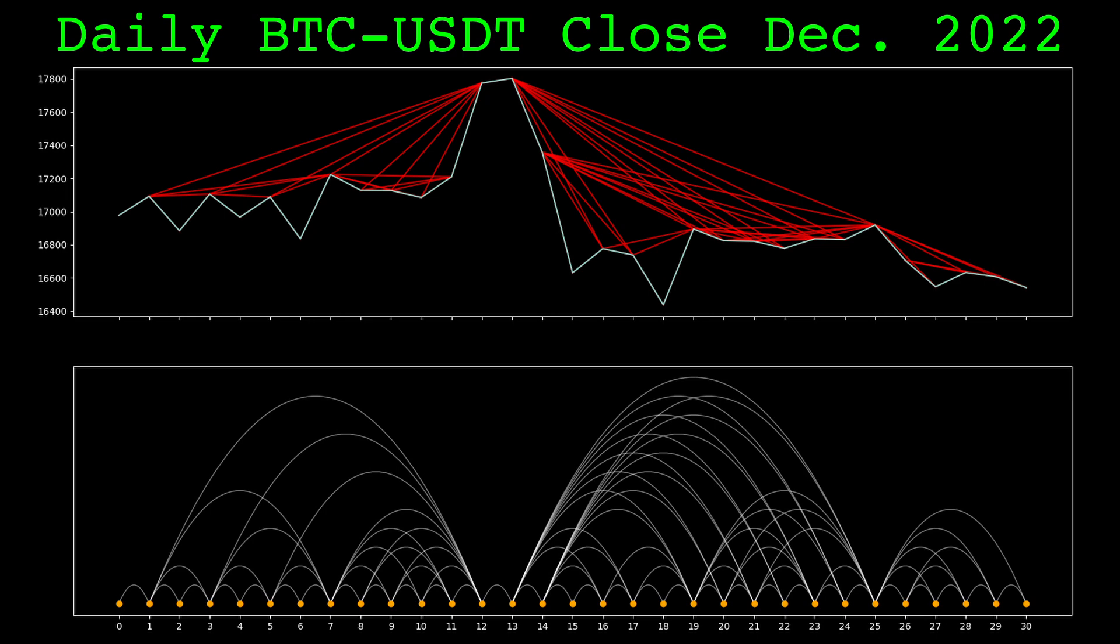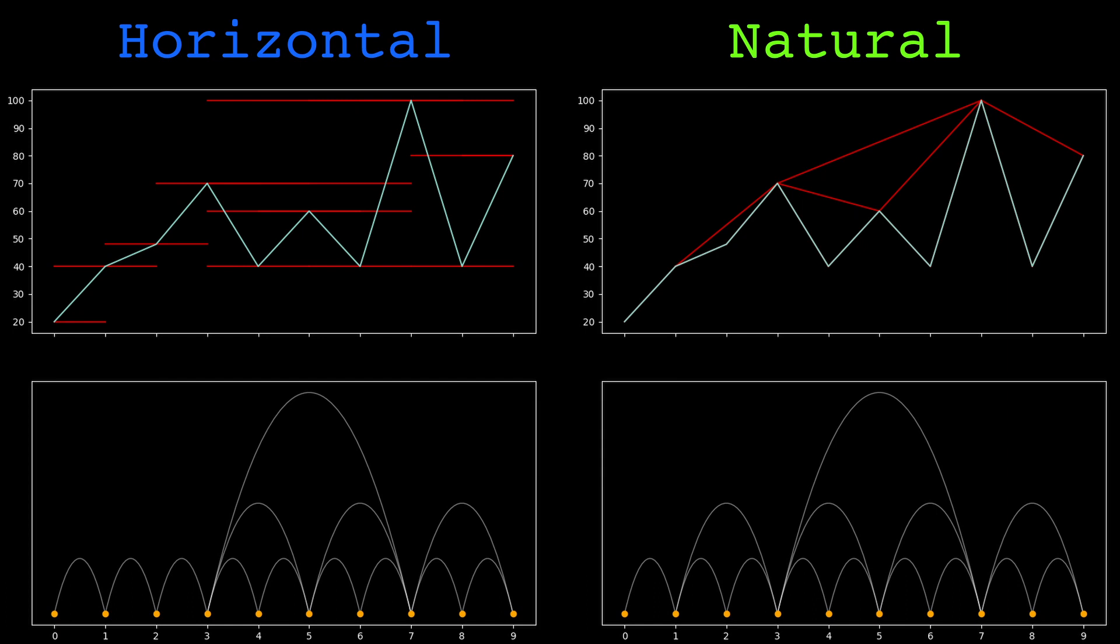All of these graphs shown are natural visibility graphs. There is another variant called horizontal visibility graphs. Here we see the natural visibility graph and the horizontal visibility graph for the same series. They are mostly the same, but the horizontal visibility graph does not have a link between nodes 1 and 3, where the natural visibility graph does.